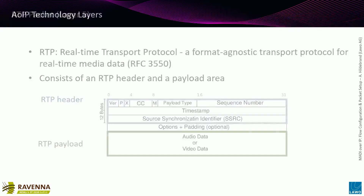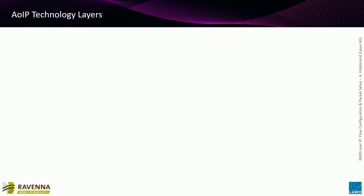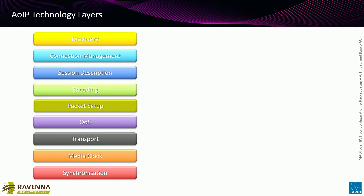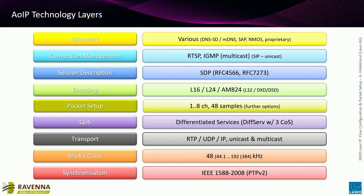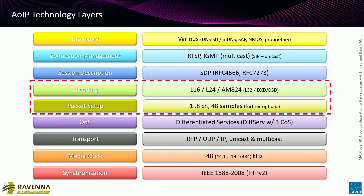Let's take a quick detour into a typical Audio over IP solution layered approach. An AoIP solution has functional blocks similar to the OSI model: synchronization, media clocking, transport, QoS, all the way up to connection management and discovery. Depending on the actual solution, it offers several options on these individual layers. For example, synchronization uses IEEE 1588 - that's PTP. Transport protocol in the third layer is RTP over UDP/IP. This is just an example of what Ravenna uses. What we want to check out is what the encoding and packet setup look like.